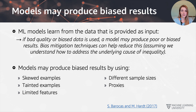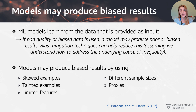Where does the bias come from? Some models may produce biased results if we have skewed examples, tainted examples, a limited number of features — meaning not enough information — or different sample sizes for different groups, or proxy variables in our data.